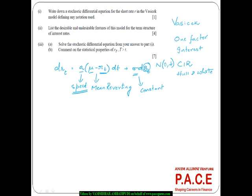This model falls under the category of an arbitrage-free model, which makes it more powerful to use in the real world. It exhibits mean reverting behavior, and it is helpful in terms of pricing derivatives and bonds. It is also relatively easier to compute.